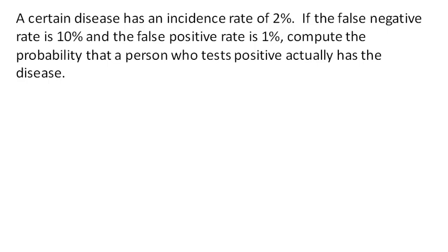So now we have another disease that has an incidence rate of 2%. The false negative rate is 10%, false positive rate is 1%. Let's compute the probability that a person who tests positive actually has the disease.